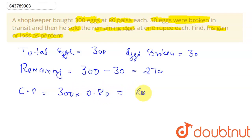Now what will be the total selling price of the eggs? He sold only the remaining eggs, and remaining eggs are 270, and he sells them at one rupee each. So the total selling price will be equal to 270.